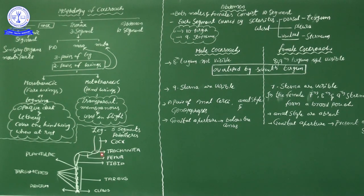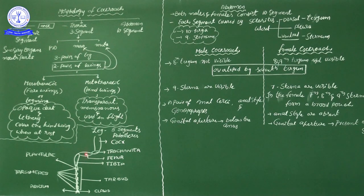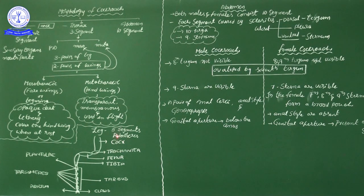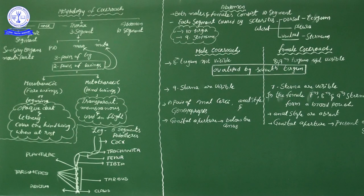The five podomeres are: first, coxa; second, trochanter; third, femur; fourth, tibia; and fifth, tarsus. You may find two familiar words — femur and tibia — which you already heard in the skeletal system of the human being. These are similar structures but primitive versions found in the leg of the cockroach. You should remember the names and sequence of these five podomeres.